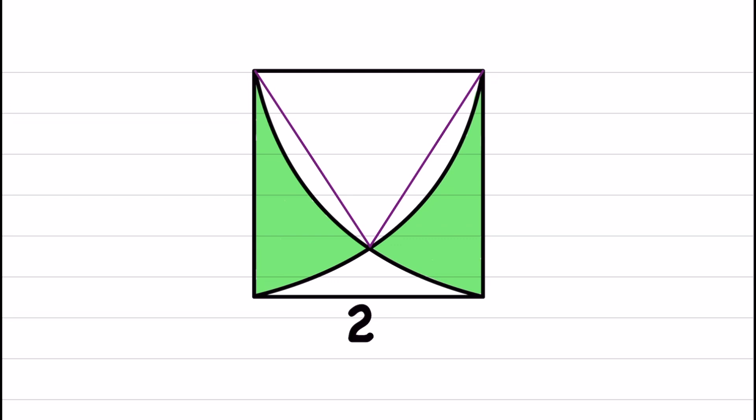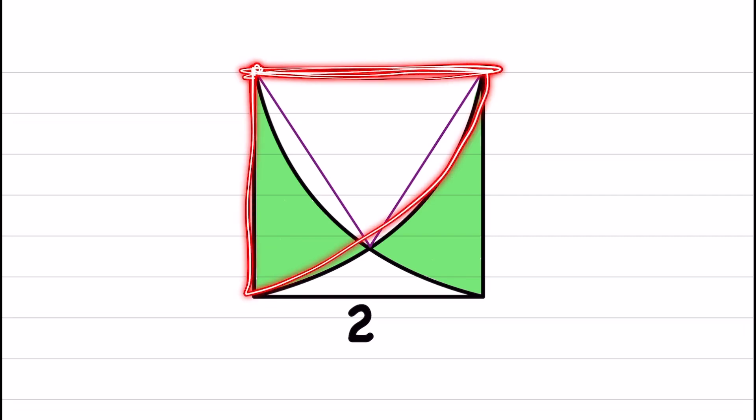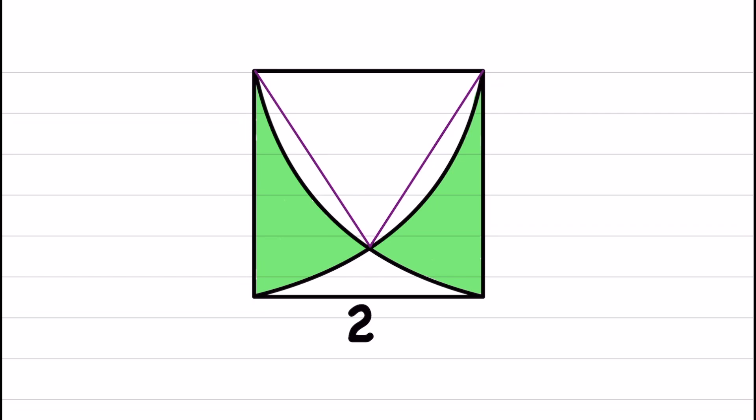Each of these is a radius, and the radius of this quarter circle equals the length of this side. The radius is 2, so we have radius here which is 2, radius here which is 2, and this line is the side of the square, also 2.